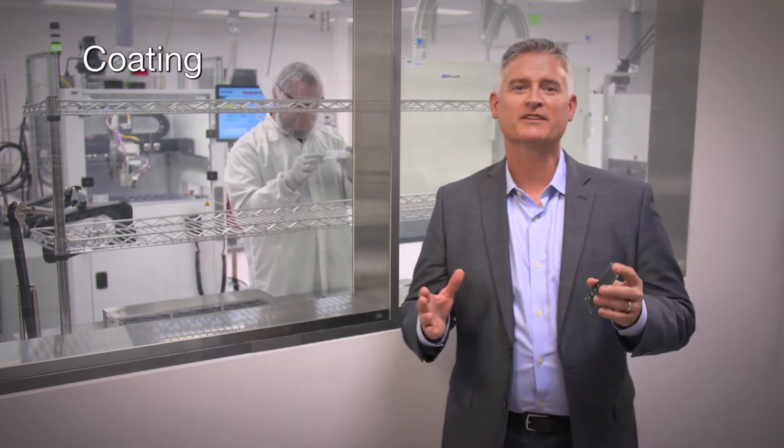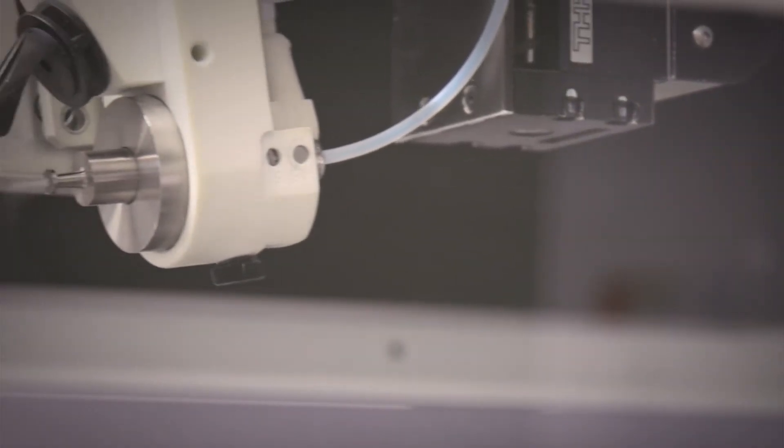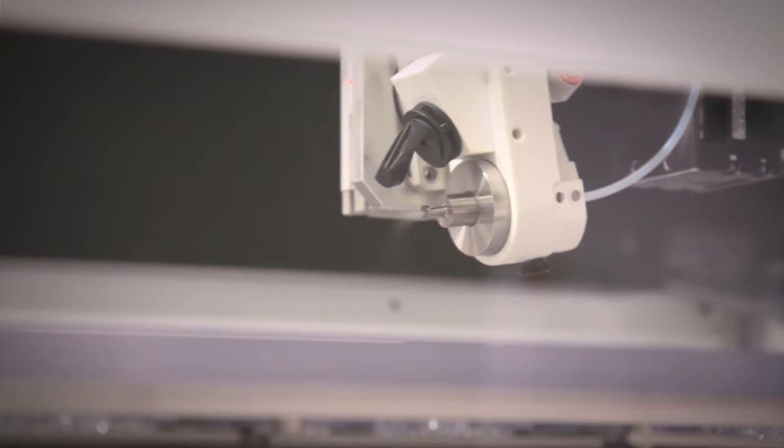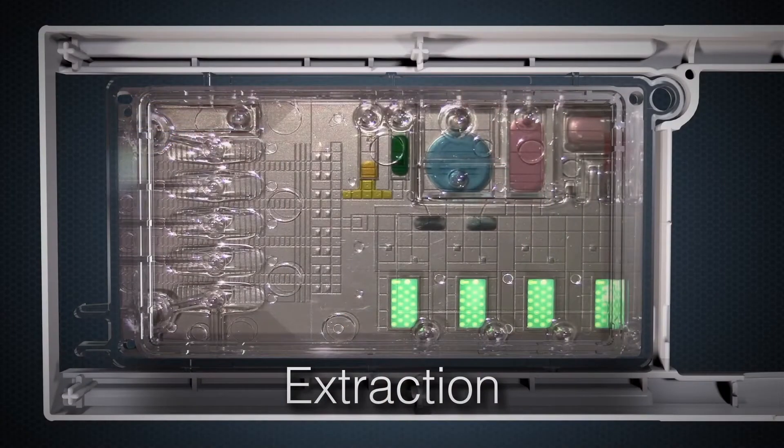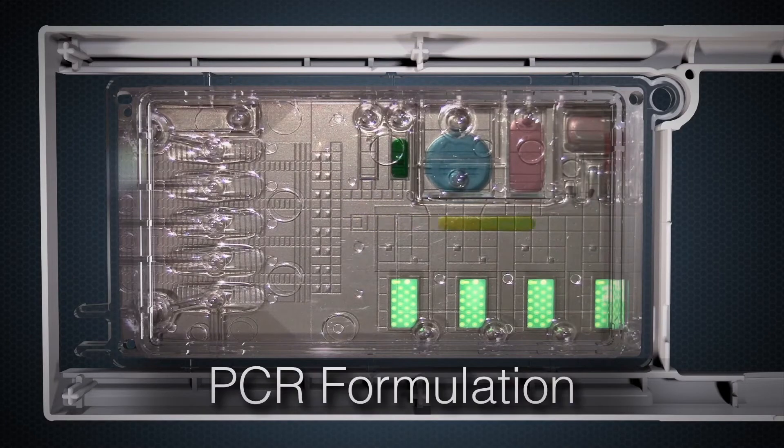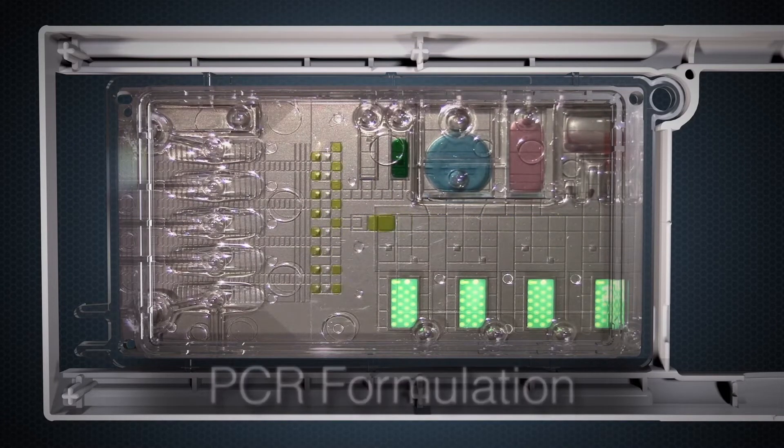Now we'll briefly discuss our coating process which prepares the surfaces of the cartridge. As you can see, we have equipment used to coat ePlex cartridge components. This coating process is required to enable the proprietary microfluidic technology called electrowetting. Electrowetting can be thought of as digital microfluidics where programmed electrical voltages are used to control small volumes of fluid on a specially designed circuit board.